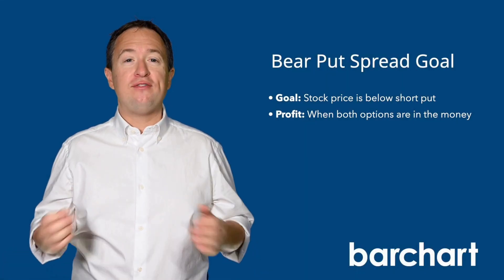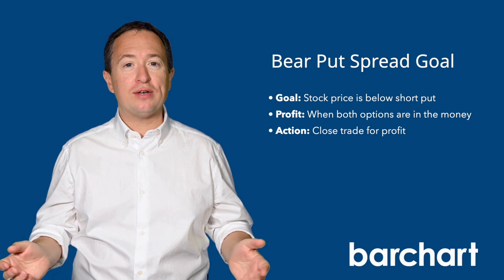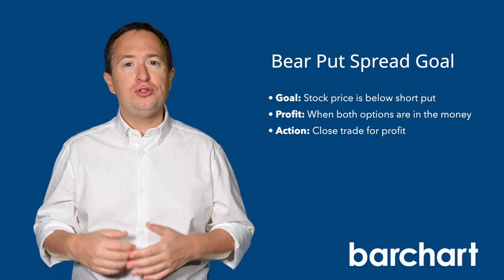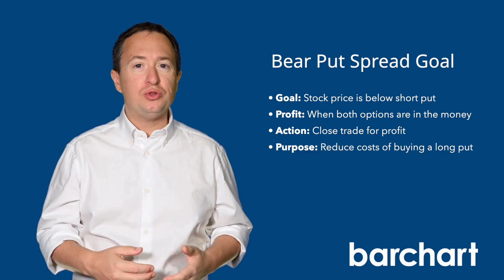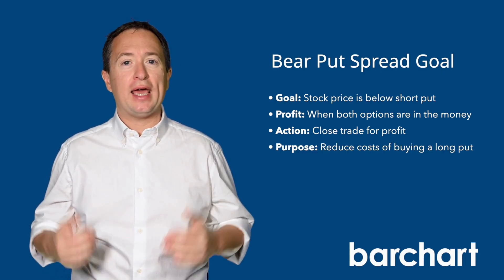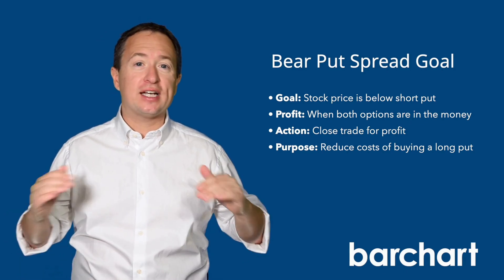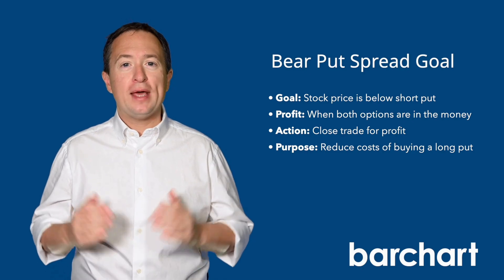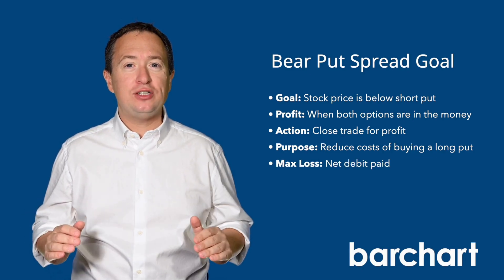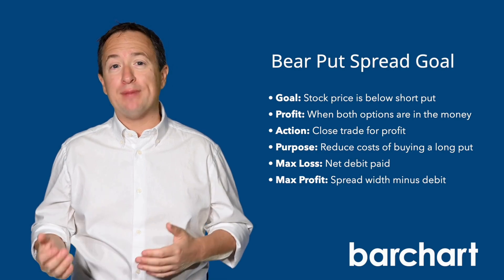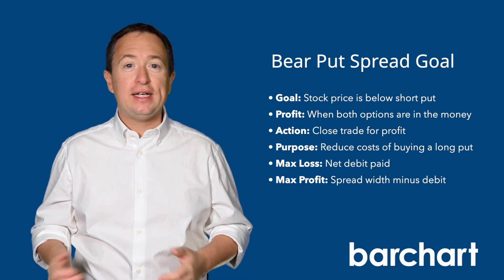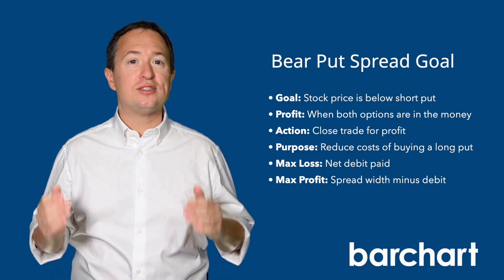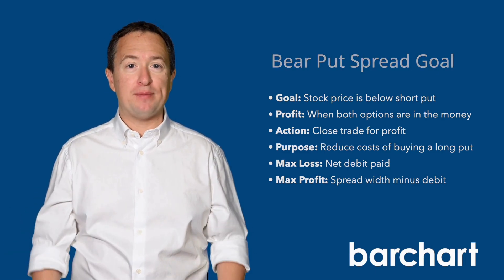If that happens, investors can then close out the trade and collect a profit. Put-debit spreads are used when an investor wants to reduce the costs of buying a long put while participating in the decline of an underlying security. Also, maximum loss is limited to the net debit paid. The maximum profit for a bear put is the difference between the two strike prices, also known as the width of the spread, minus the debit paid.